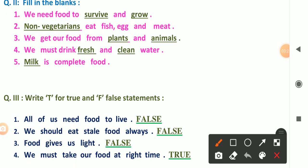Next is fill in the blanks. Number one: we need food to survive and grow. Survive means to live, grow means to become bigger. We need food to survive and grow. Number two: non-vegetarians, those who eat meat, eat fish, egg and meat.